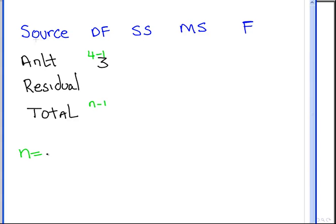So total degrees of freedom is going to be 23. So what does this make the residual degrees of freedom? Well, essentially what we have to do is they actually have to add up to 23. So analyst degrees of freedom plus residual degrees of freedom have to add up to 23. So essentially it has to be 20.